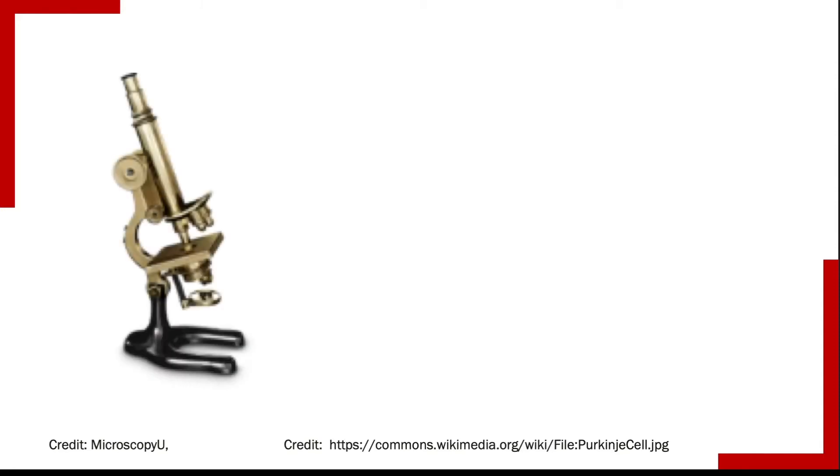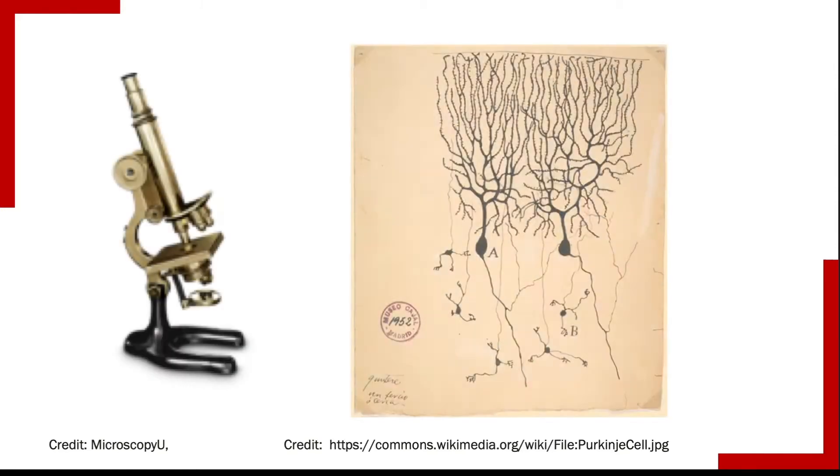There are lots of ways that cell biologists use to study cells but my favorite one is the microscope. People have been using microscopes to study cells for a long time. This picture is from a biologist named Santiago Ramón y Cajal who drew these pictures of neurons all the way back in 1899.